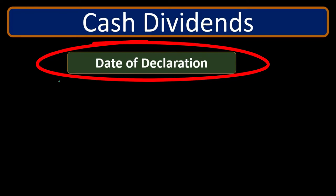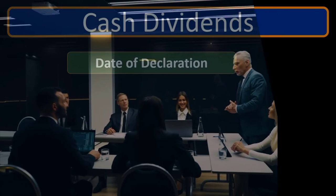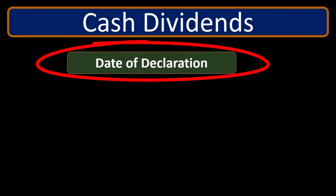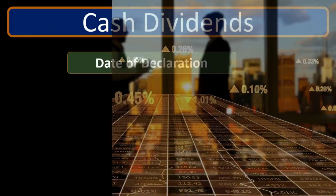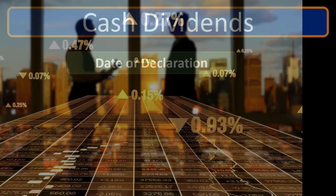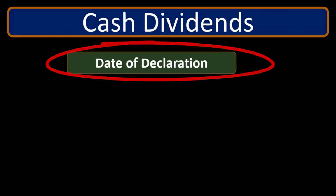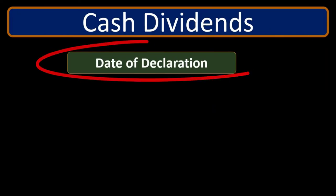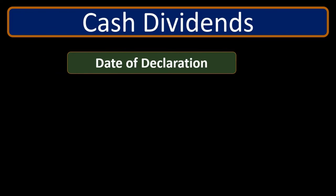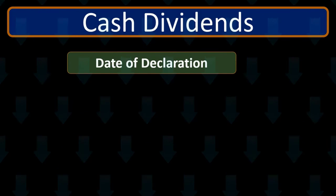The first date is the date of declaration — when the board of directors gets together and declares a dividend. At this point, the company has committed itself to pay money to stockholders. We record the dividend: retained earnings goes down, and because the cash hasn't left yet, we record a liability — dividends payable. The retained earnings decreases, representing that the value of the company is going down as recorded in the equity section.